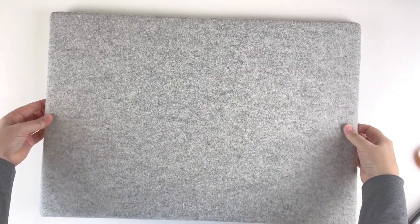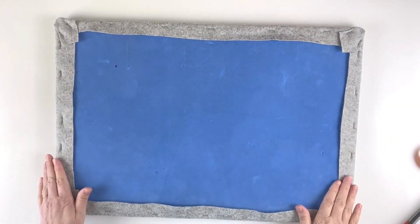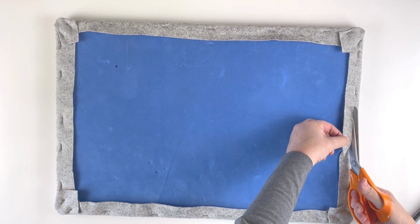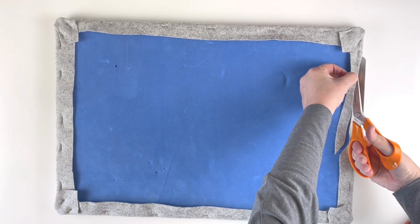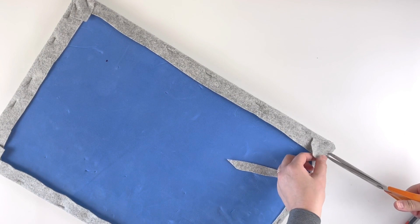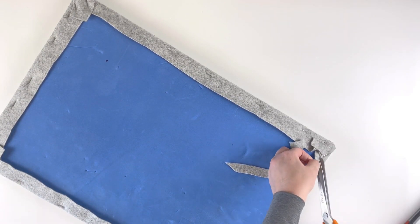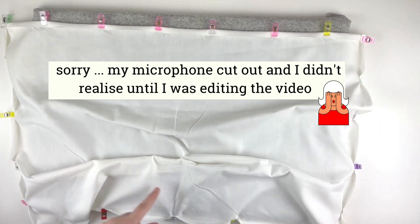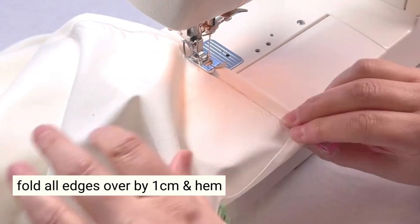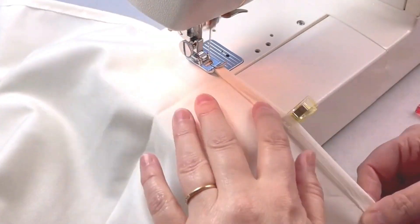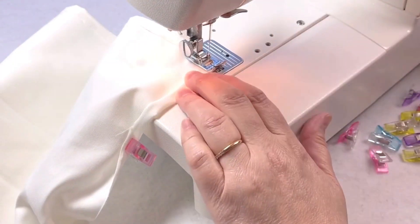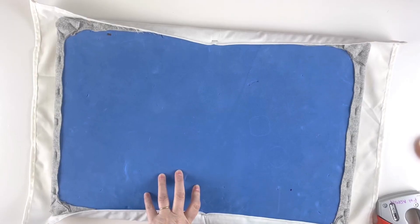That looks really nice now. I'm happy with that. The corners look neat. That's what it looks like on the other side. I'm going to trim this off so there's a little bit less felt there. The reason I'm doing that is when I put the next layer on—the white cotton—I want it to sit right over this felt because I don't want to have to go through all the layers with the stapler.